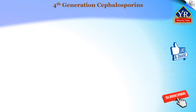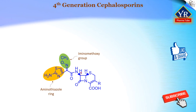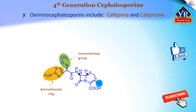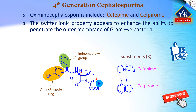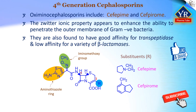Fourth-generation cephalosporins: Attempts have been made to modify the R2 side chain of the third-generation cephalosporins while leaving the highly successful aminothiazolyl group at R1 unchanged. The result of these efforts was the fourth-generation cephalosporins, chemically known as oxyiminocephalosporins, which include cefepime and cefpirome. They are zwitterionic compounds having a positively charged substituent at position 3 and a negatively charged carboxylate group at position 4. This property appears to radically enhance the ability of these compounds to penetrate the outer membrane of gram-negative bacteria. They are also found to have a good affinity for the transpeptidase enzyme and a low affinity for a variety of beta-lactamases.